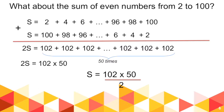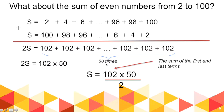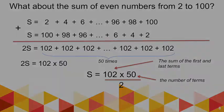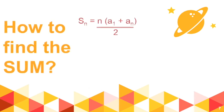Notice that 102 is actually the sum of the first term and the last term, and 50 here is the number of terms. This leads us to the formula for finding the sum of the numbers in a sequence: S sub n is equal to n over 2 times (a₁ plus a sub n). So a₁ plus a sub n is the sum of the first and the last term, and n is the number of terms.